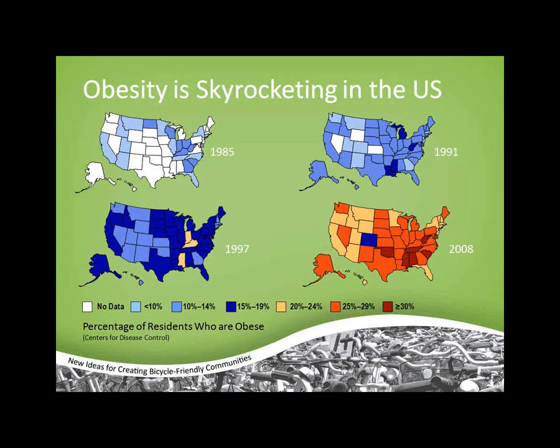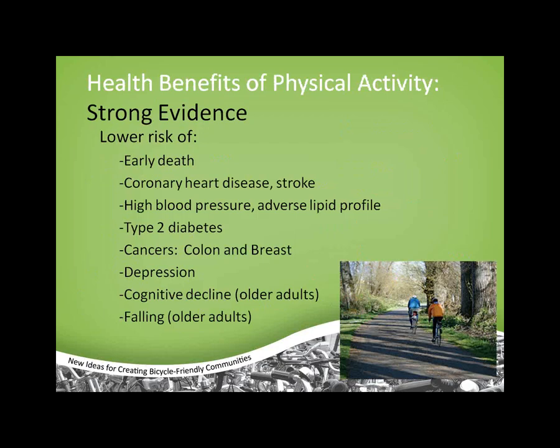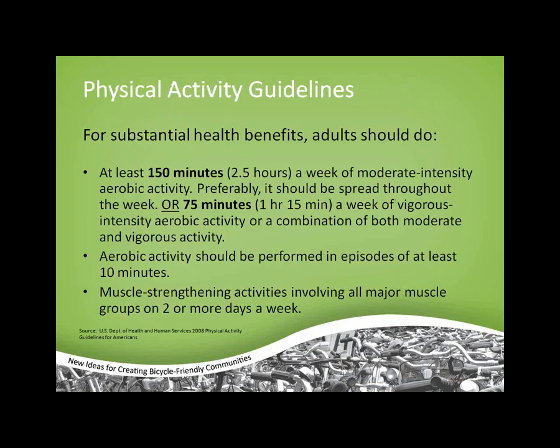There is strong evidence that cycling reduces your risk of early death, coronary heart disease, stroke, high blood pressure, type 2 diabetes, certain cancers, depression, cognitive decline, and falling in older adults. The Department of Health and Human Services physical activity guidelines, out since about 2008, recommend at least 150 minutes a week of moderate intensity activity or 75 minutes of highly aerobic activity. This doesn't have to be all at once — it can be spread out over a week into 30-minute periods or even three 10-minute periods.